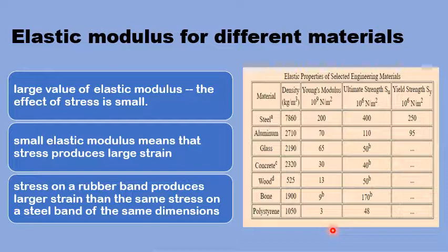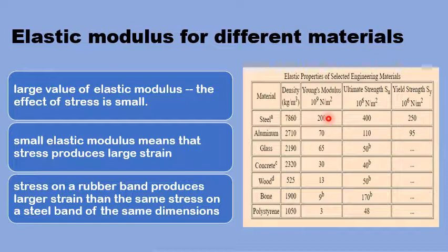Stress on a rubber band would produce large strain, like maximum stretch. The same amount of stress, if applied to steel, would only produce a very small deformation change in the length of the steel bar. In between steel and polystyrene, there are other materials including bone, glass, concrete, and different other materials between the two extremes.